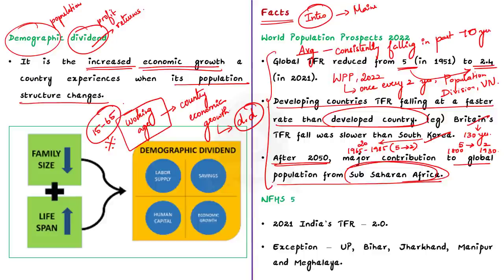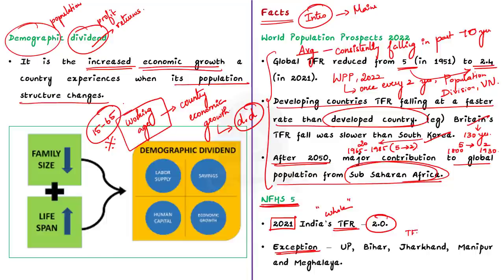The editorial also gives data from the National Family Health Survey 5. According to NFHS 5, in 2021, the TFR for India as a whole has reached 2, and almost all states have reached the replacement level of fertility or even lower. However, five states have TFR greater than 2.1: Uttar Pradesh, Bihar, Jharkhand, Manipur, and Meghalaya.